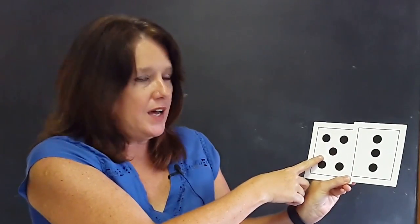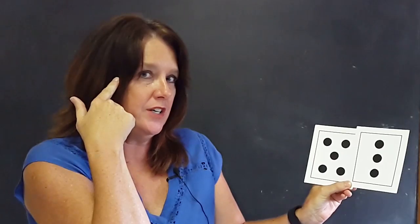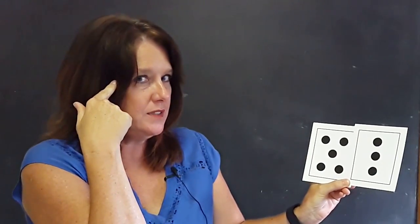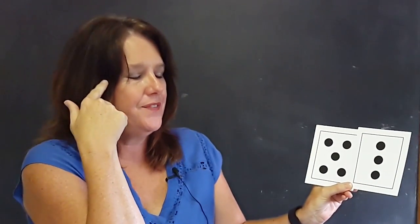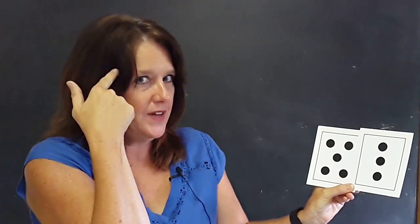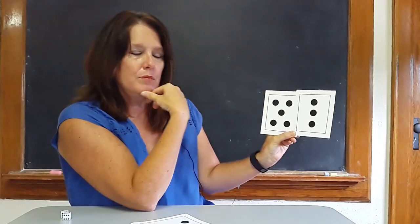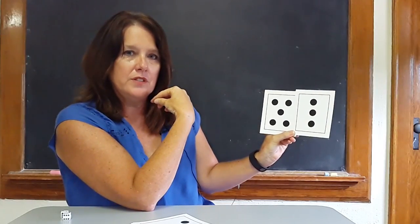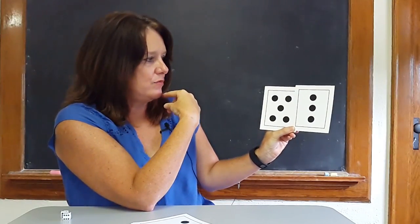So we would take five and put it in our head. We're going to hold the five in our head. Boys and girls, don't forget it. What number's in your head? Five. And then we're going to start with five and count on: five, six, seven, eight. Boys and girls, how many dots are on the two cards? Eight. That is right.